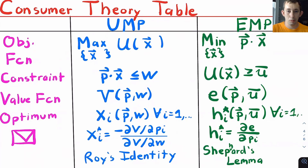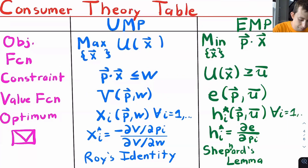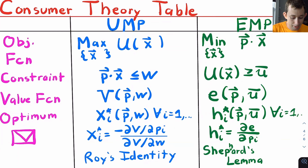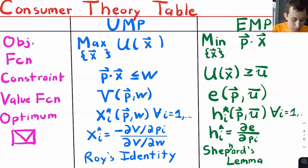Now let's jump into these tables. I've made two tables: one for consumer theory and one for producer theory. Starting with the utility maximization problem: our objective function is utility, we have a budget constraint, and our optimum is Marshallian demand x*. We take Marshallian demand and plug it into the utility function to get the value function, which we call indirect utility v. For the envelope theorem in the utility maximization problem, we have Roy's Identity: take the derivative of the value function with respect to the price of one good, put a negative sign in front, and divide by the derivative of the value function with respect to wealth w — and that gives you Marshallian demand for that good.